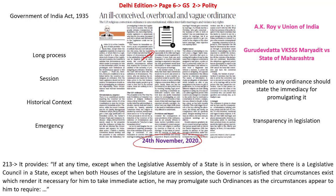Looking at the background, we have the ordinance making power whose origin started with the Government of India Act of 1935. There is Section 42 under the Government of India Act of 1935, which went on to say that the governor general can issue an ordinance while the central legislature was in recess. So the basic principle of ordinance as a concept was originated under the Government of India Act of 1935.